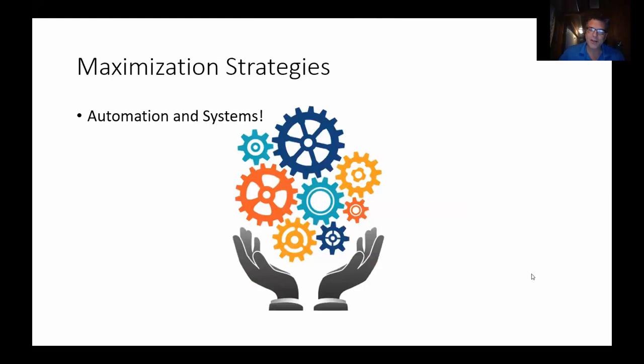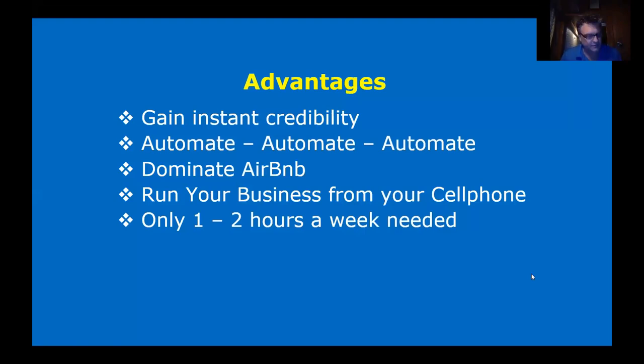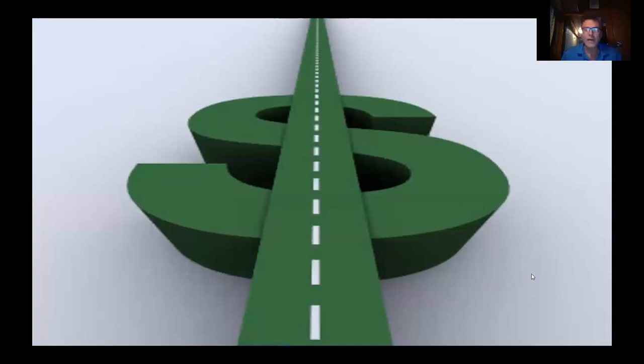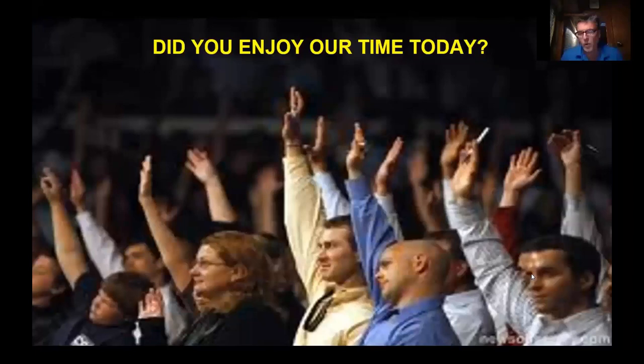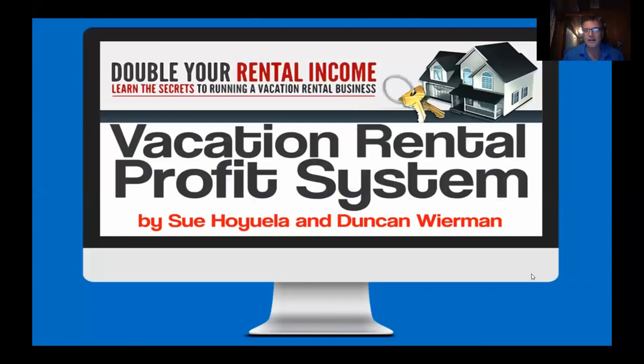The key lesson in the course is how to automate all this: how to run the business without actually being at the property, how to systematize it so you work less and make more money. The course shows you how to gain instant credibility, how to dominate Airbnb, run the entire business from your cell phone, and do it in one to two hours a week. To make $100,000 and only work one to two hours a week — that's the lifestyle most people dream about. There's a super highway to Airbnb success. Duncan is very passionate about this — it works and it will change your life.